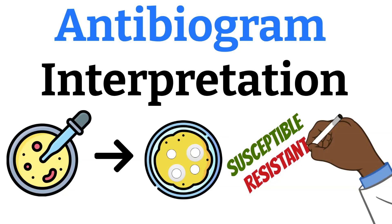One of the most important goals of managing infectious diseases is to identify the correct microorganism and then match it to the correct drug — selecting the right drug for the right bug. Antibiograms give us information that allows us to make the selection of the right drug with more confidence. In this video, I will break down all you need to know about antibiograms plus how to interpret them in a simple step-by-step way.